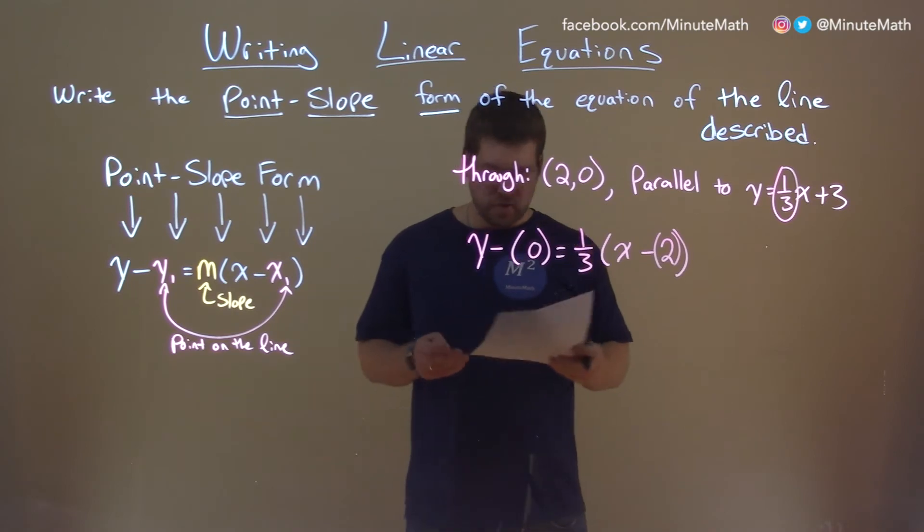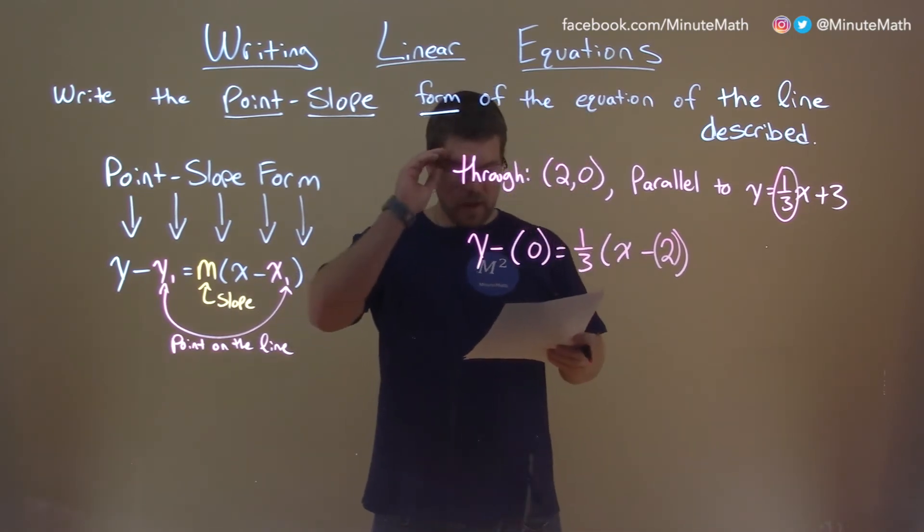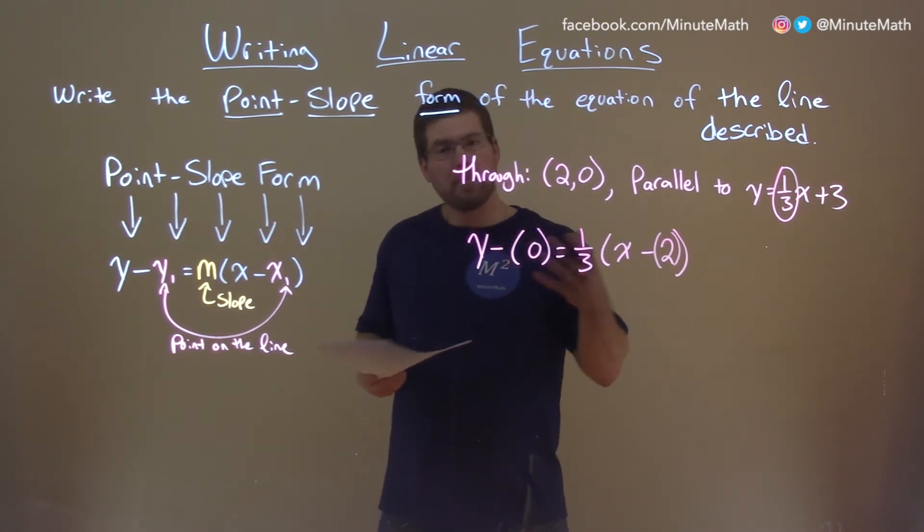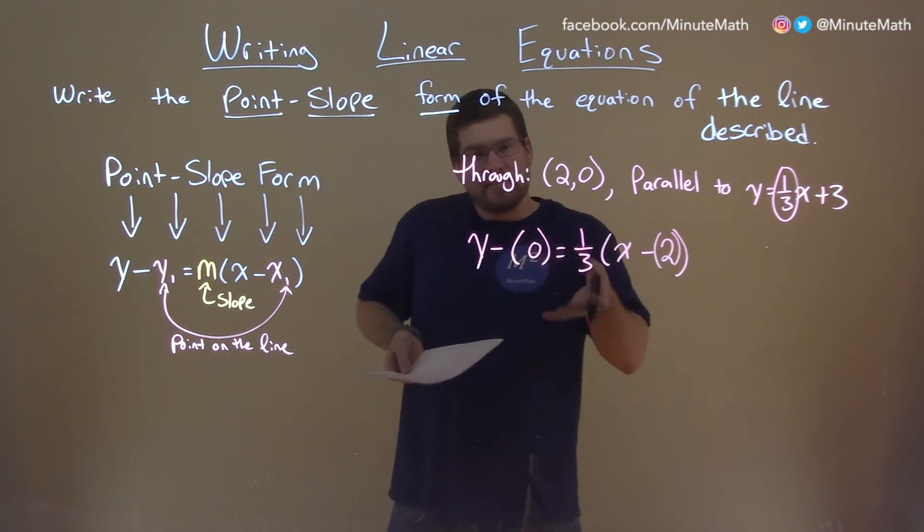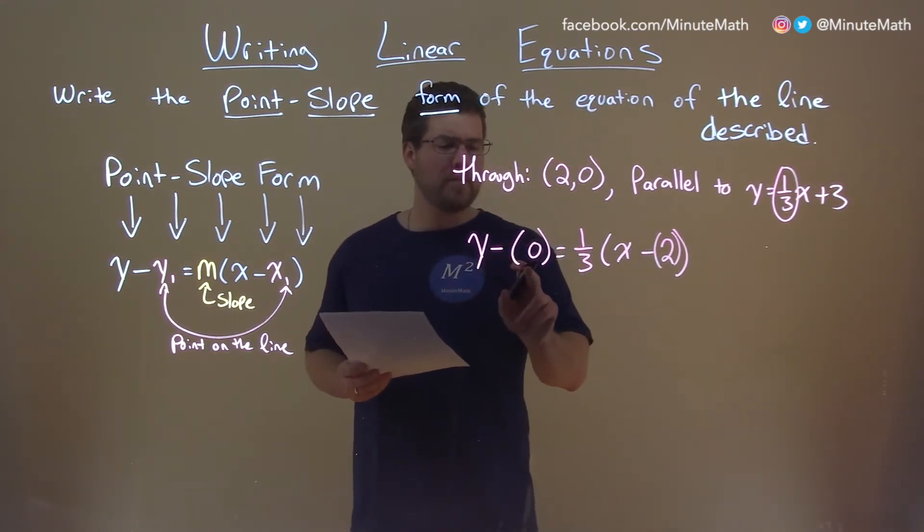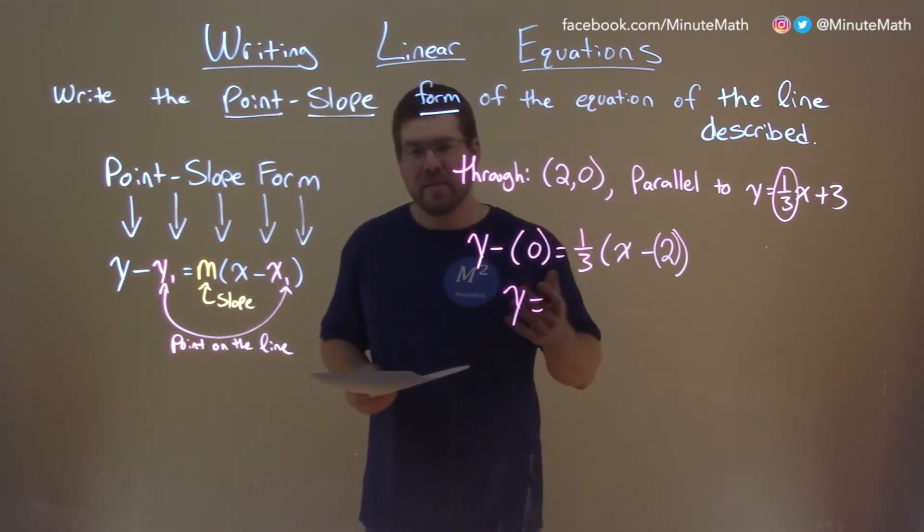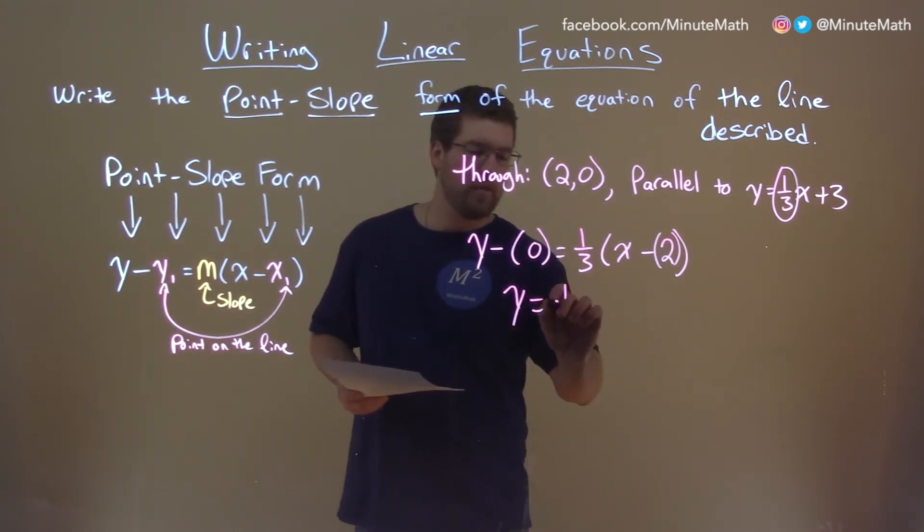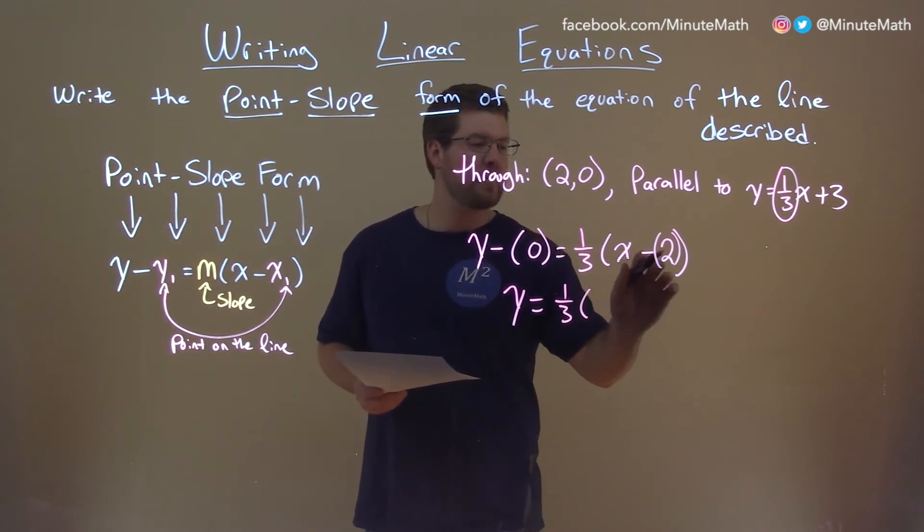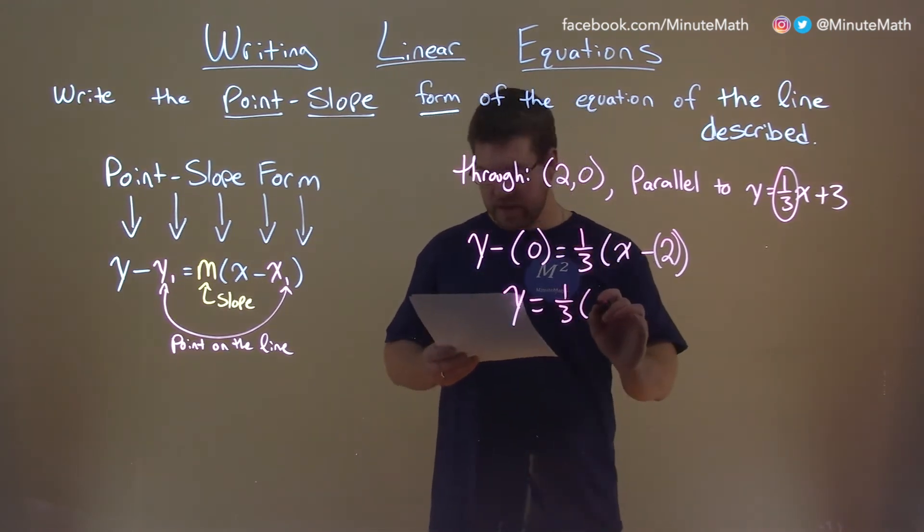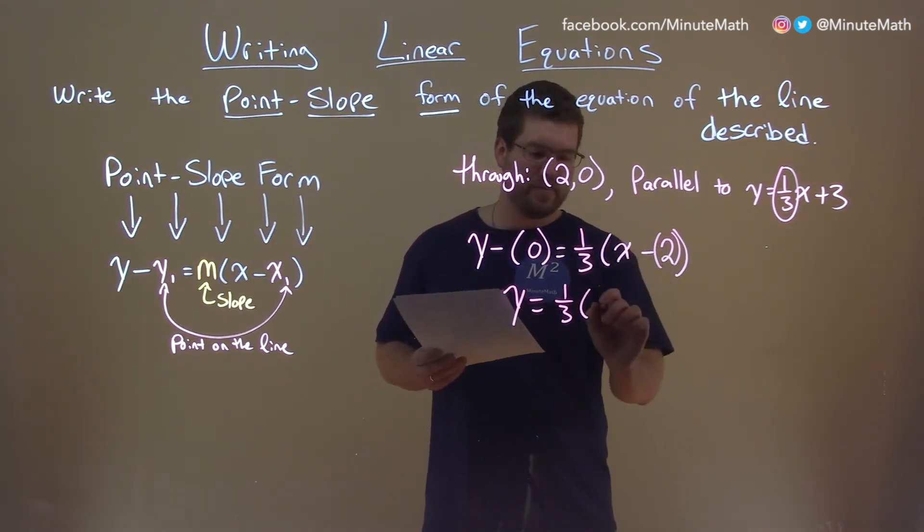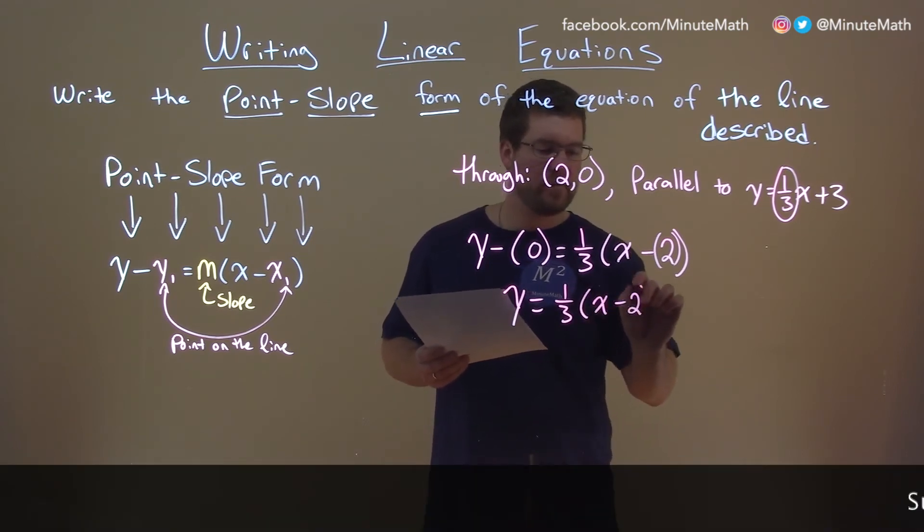Okay? So now let's clean this up a little bit, and then we'll see where we're at. So we have it in point-slope form, but let's clean it up. We can make it simpler. y minus 0, no one writes that. We just have a y here, right? Subtract 0 doesn't do anything. 1/3 still out front, and then x minus 2, no need for the parentheses, or the extra set of parentheses, just x minus 2 here.